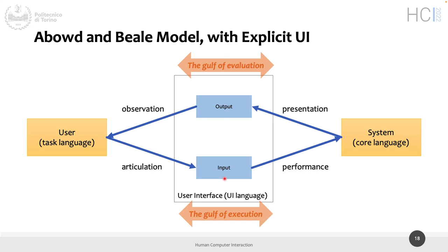The extended model also splits evaluation and execution into four parts: articulation — between user and input; performance — between input and system; presentation — what the system presents through the user interface; and observation — what the person understands after observing the output. Articulation involves forming the goal and doing the task; performance is the task executed on the system as quickly as possible.